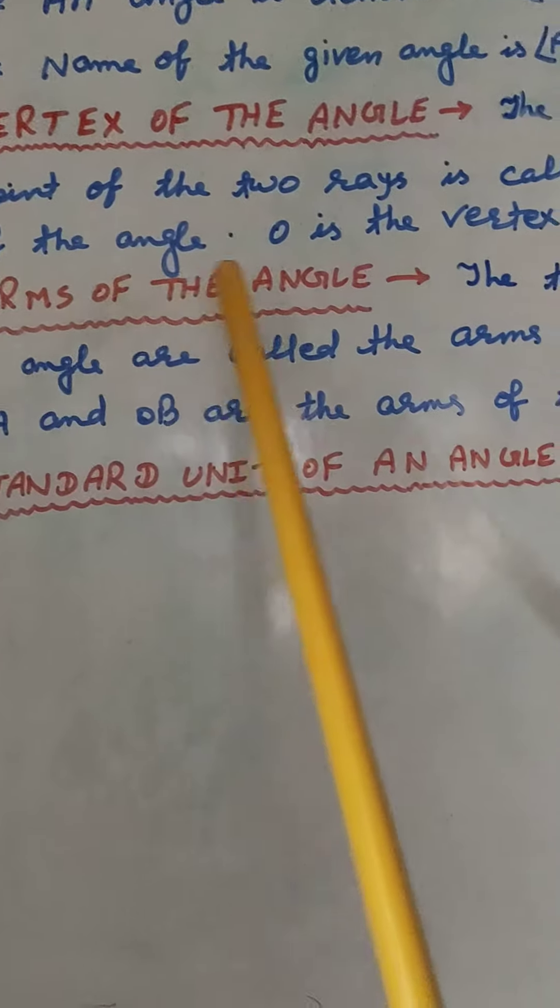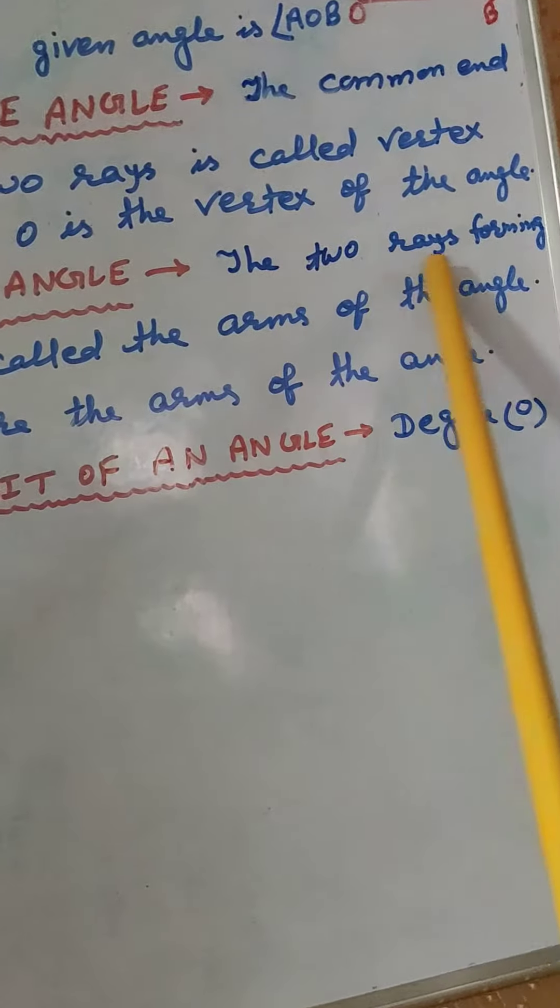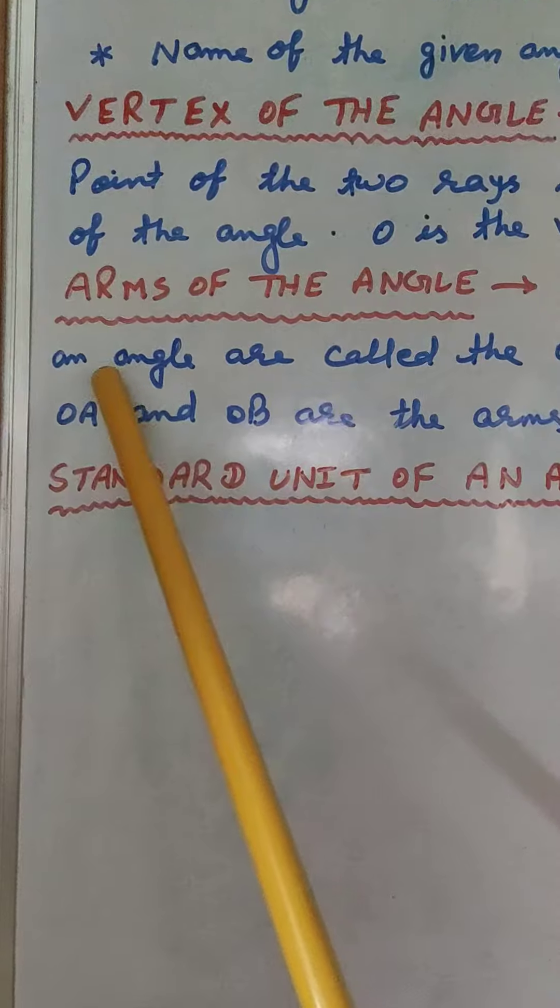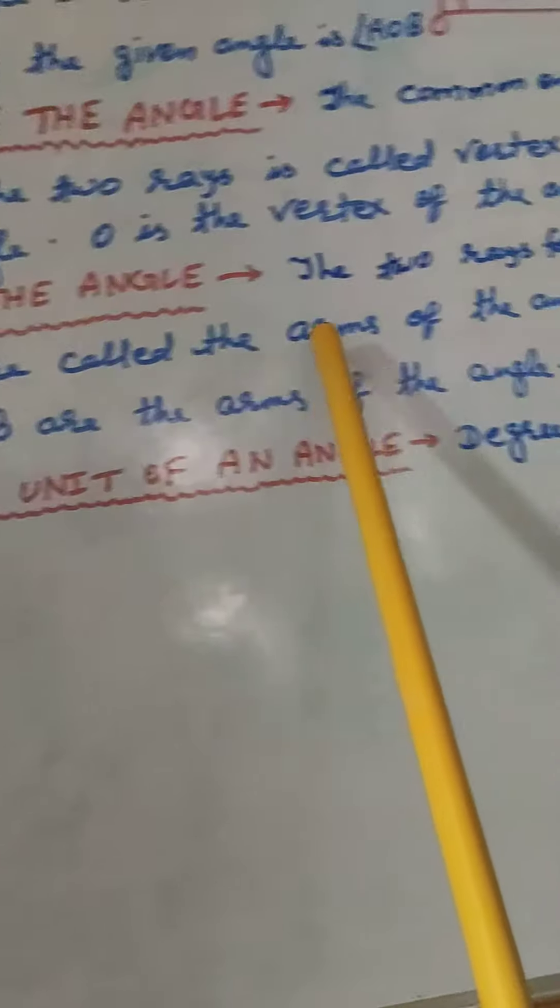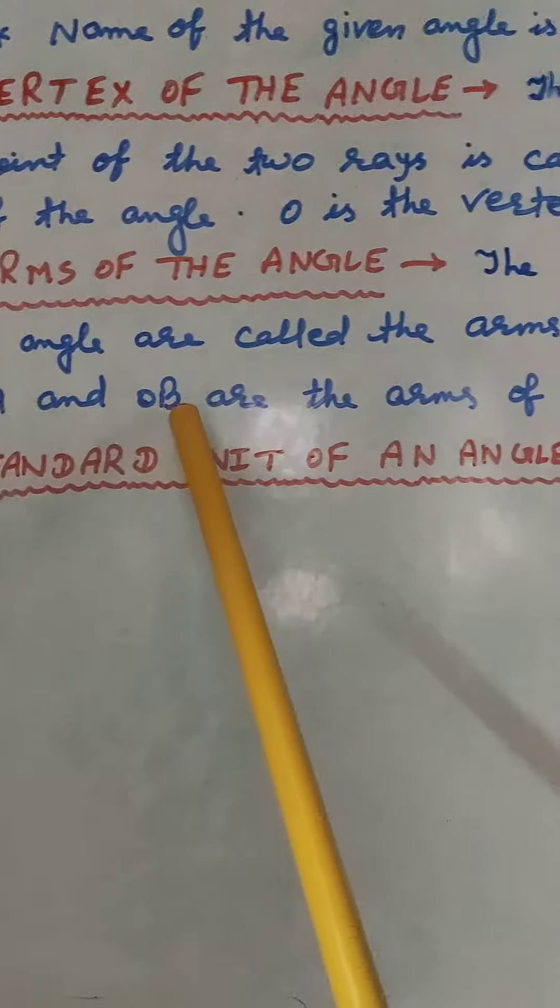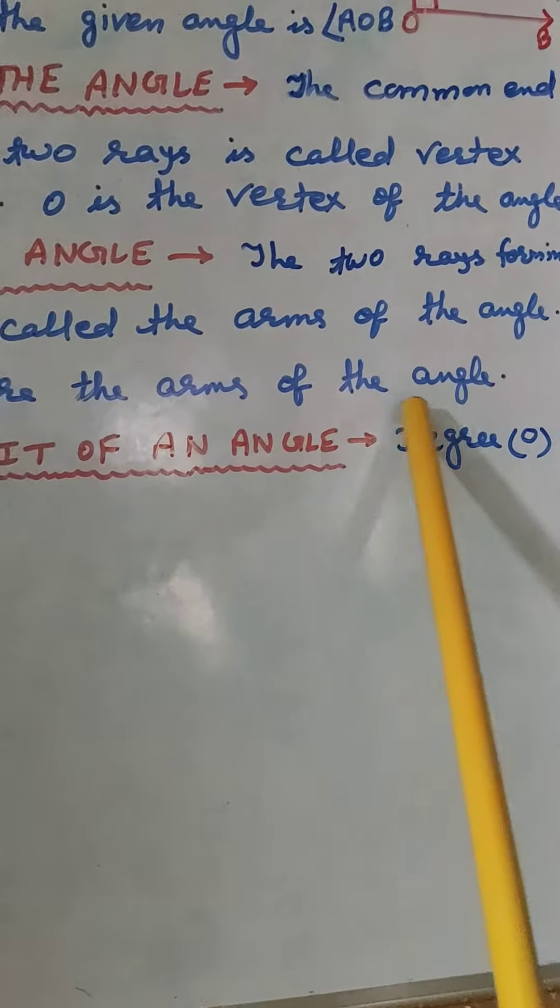Next. Arms of the angle. The two rays forming an angle are called the arms of the angle. OA and OB are the arms of the angle.